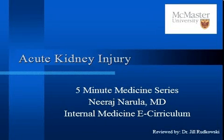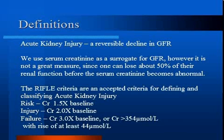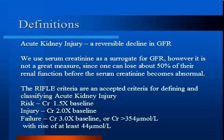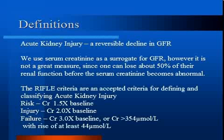The 5-Minute Medicine Series on Acute Kidney Injury. Acute kidney injury is defined as a reversible decline in glomerular filtration rate. We use serum creatinine as a surrogate for GFR. However, it is not a great measure, since one can lose about 50% of their renal function before the serum creatinine becomes abnormal.